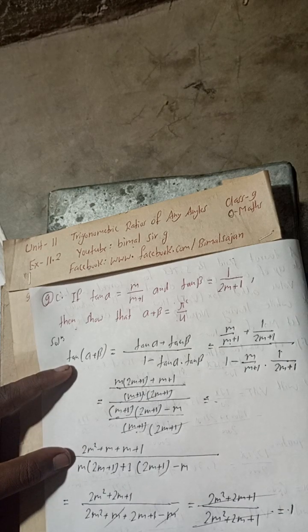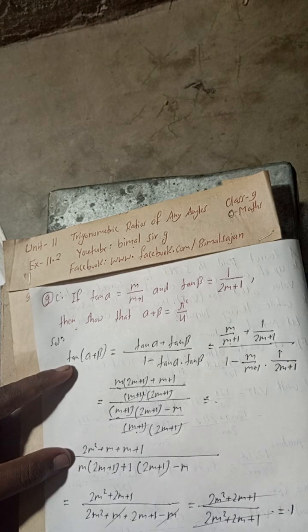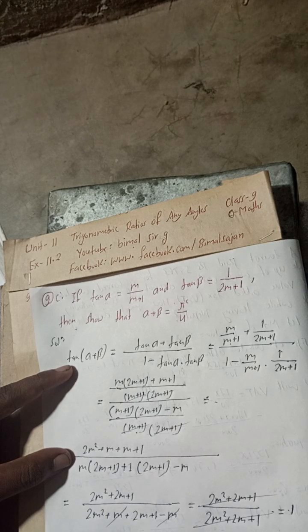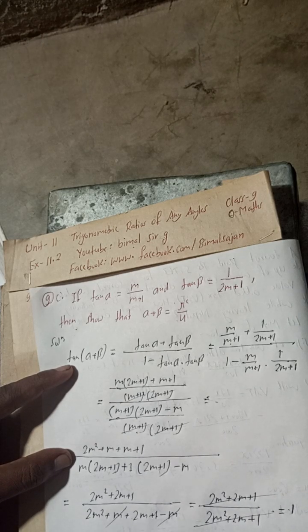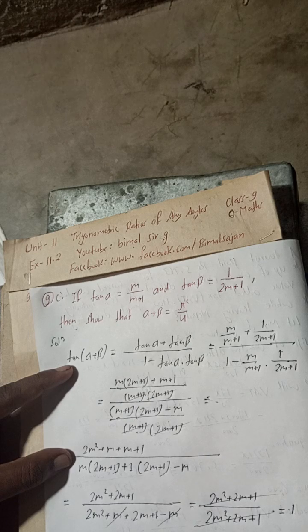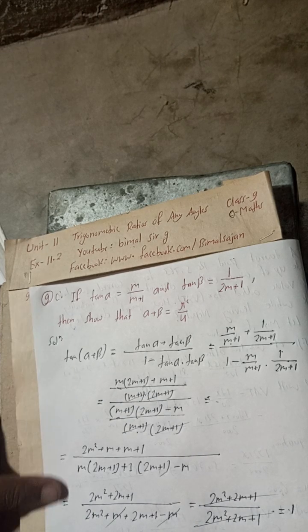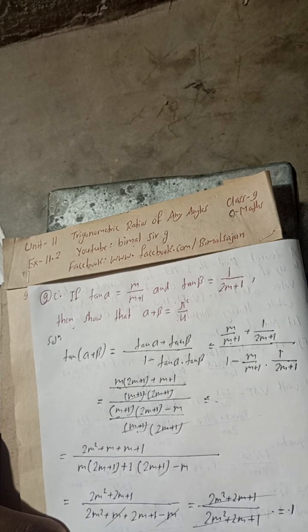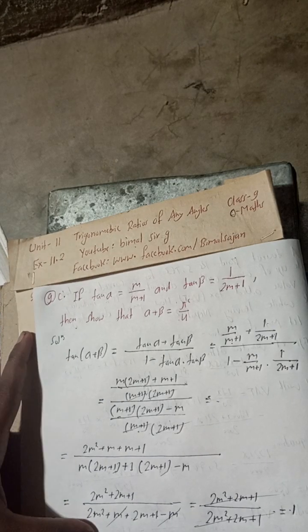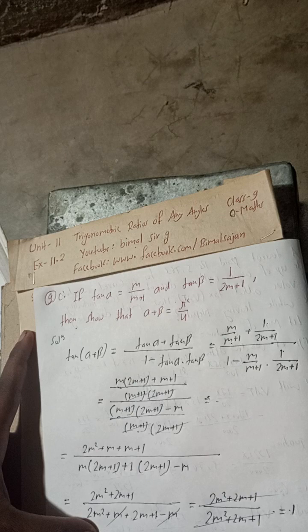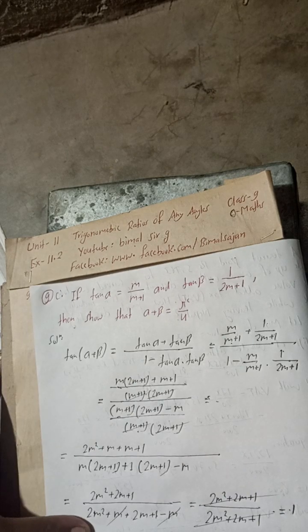Now tan(α + β) = 1. That means 1 is when tan is 45 degrees, but tan 45 degrees is tan π/4. So you can see tan, then both sides.